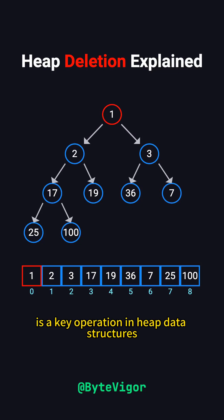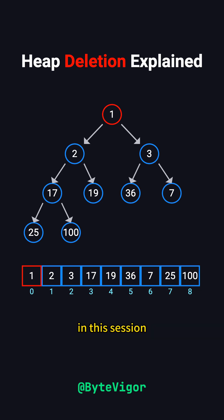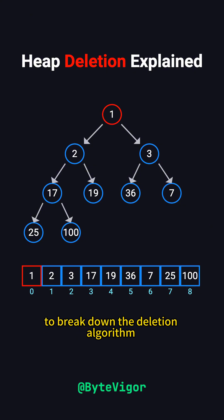Heap deletion is a key operation in heap data structures, commonly used to remove the top element. It's essential in applications like heap sort and priority queues. In this session, we'll use a min-heap as an example to break down the deletion algorithm step by step.